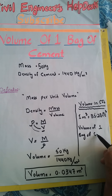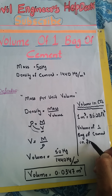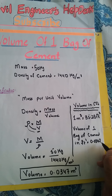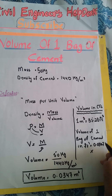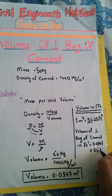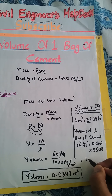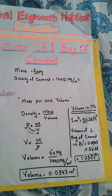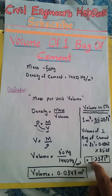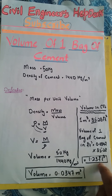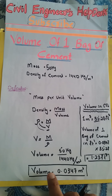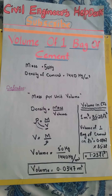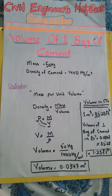The volume of one cement bag in cubic feet is equal to 0.0347 multiplied by 35.28, which gives us 1.23 cubic feet. It is very important — viewers must remember that the volume of one cement bag is 1.23 cubic feet, and in cubic meters the volume of one cement bag is 0.0347 cubic meters. These are two very important values.